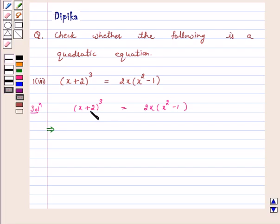We know that (a + b)³ = a³ + 3a²b + 3ab² + b³, that is x³ + 6x² + 12x + 8. This is equal to 2x³ - 2x.